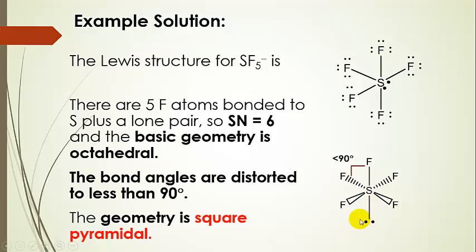When we draw that out, I put the lone pair at the bottom so that we could see our square pyramid. You don't have to do that, you could put it here or here, just make sure that you can see the shape. But all these bond angles are less than 90 degrees because that lone pair is taking up more than its share of the room. Those repulsions are more severe coming from that lone pair on these bonding pairs in the molecule. When we go ahead and name the geometry, it's going to be a square pyramidal geometry.